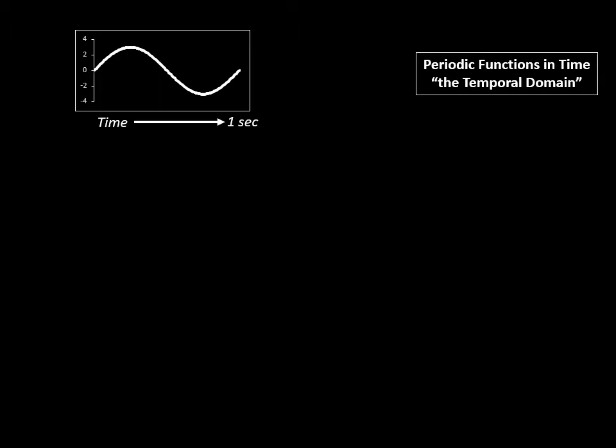We see it has an amplitude of three units above the baseline. So we would describe this wave as having a frequency of one cycle per second, an amplitude of three units.